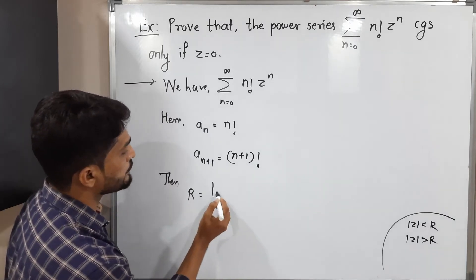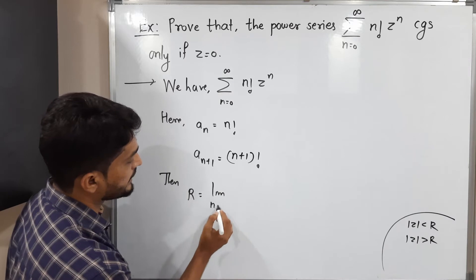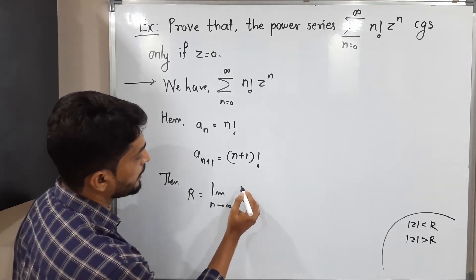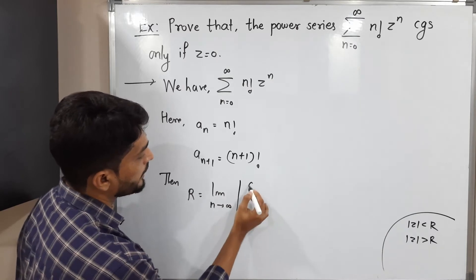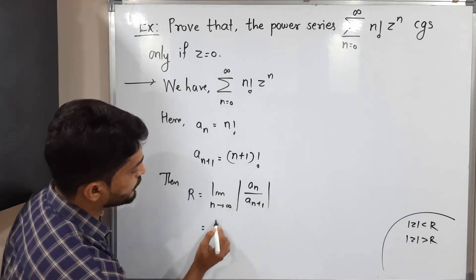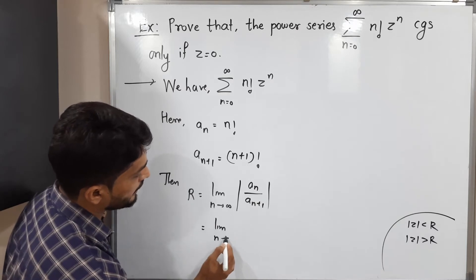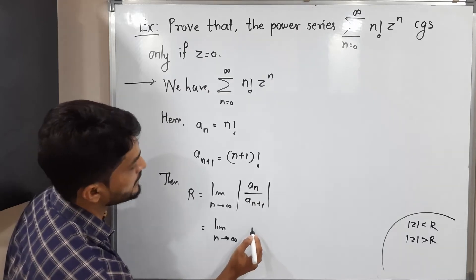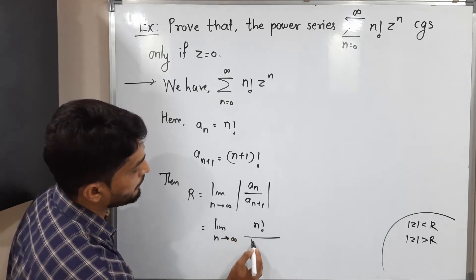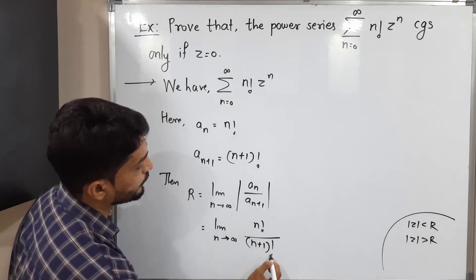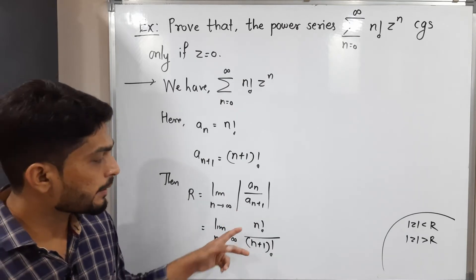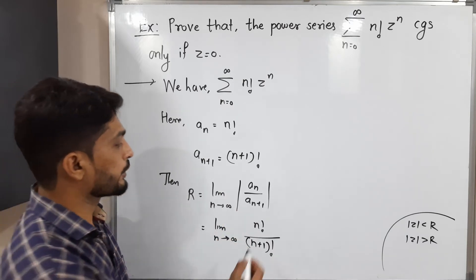The formula for radius of convergence, which we have already seen in our previous video, is R equals limit as n tends to infinity of mod(aₙ / aₙ₊₁). Let us put in the values: aₙ is n-factorial and aₙ₊₁ is (n+1)-factorial. Since these are positive real numbers, no need to apply mod.